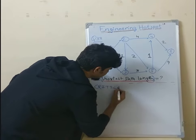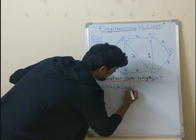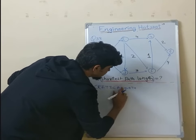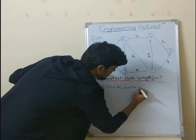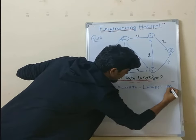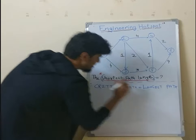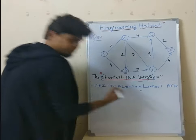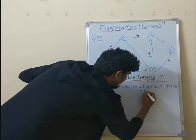Let me write for you: Critical path is equal to longest path, which is also equal to minimum time.